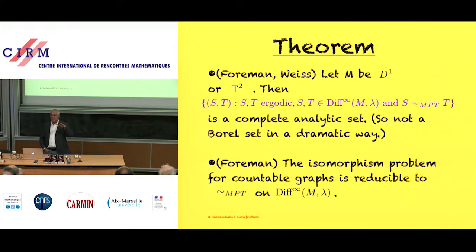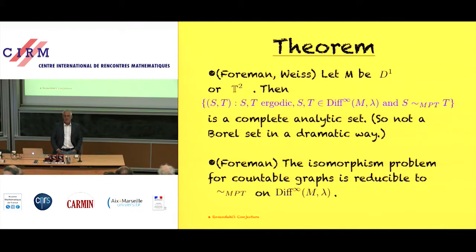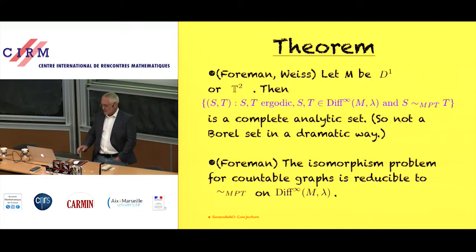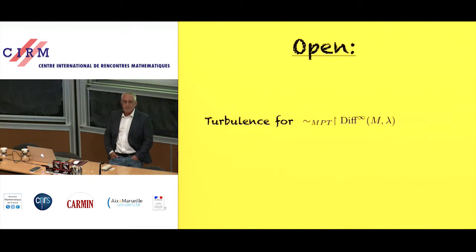There are more sophisticated questions about where this equivalence relation is placed inside the hierarchy of analytic equivalence relations. We know that the isomorphism problem for countable graphs is reducible to equivalence with respect to measure-preserving transformations on the diffeomorphisms. For abstract measure-preserving transformations without the diffeomorphism structure, we know it's turbulent. In the case of diffeomorphisms of the torus, the question of turbulence is completely open — it's not known whether you can reduce a turbulent equivalence relation to it.